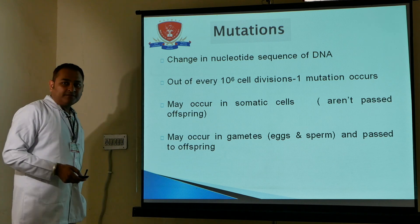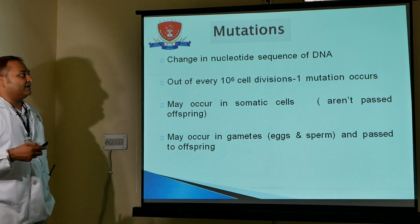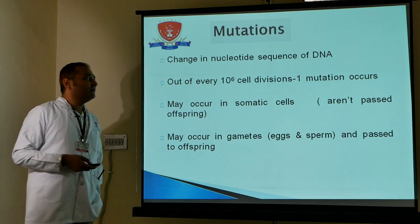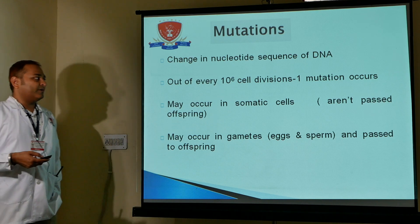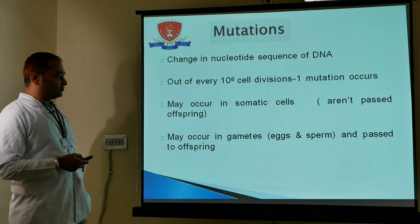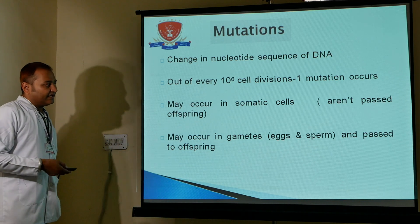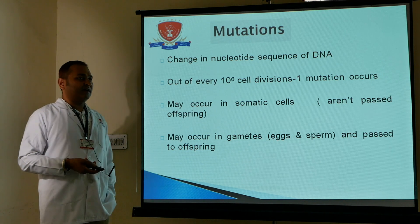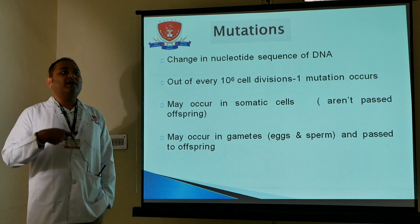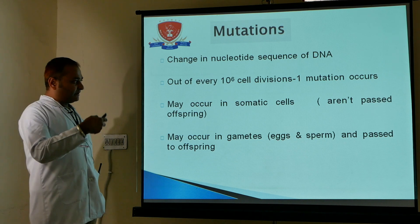Mutation is a change in the nucleotide sequence of DNA. Out of every 10 to the power of 6 cell divisions, one mutation may occur — either in somatic cells or in gametes. If mutation occurs in gametes, it will be passed on to the upcoming generation.